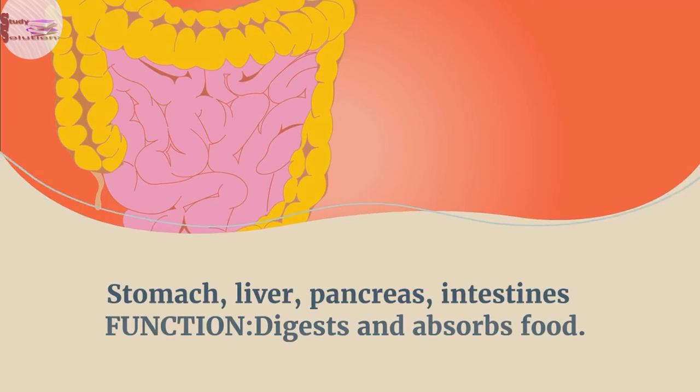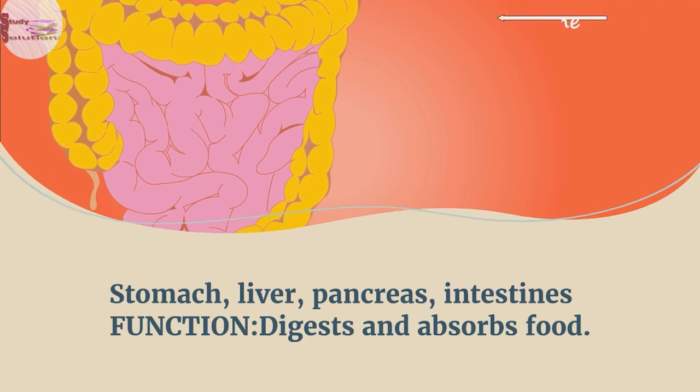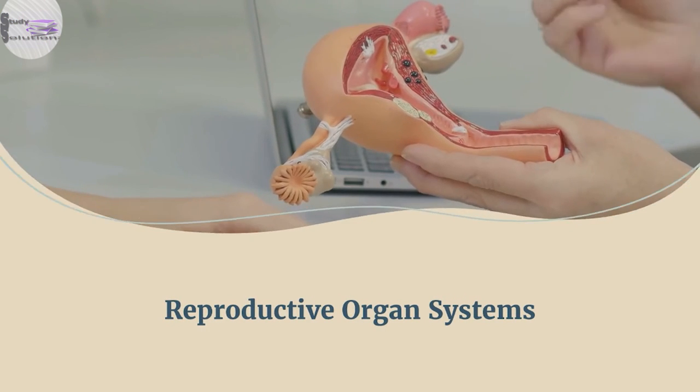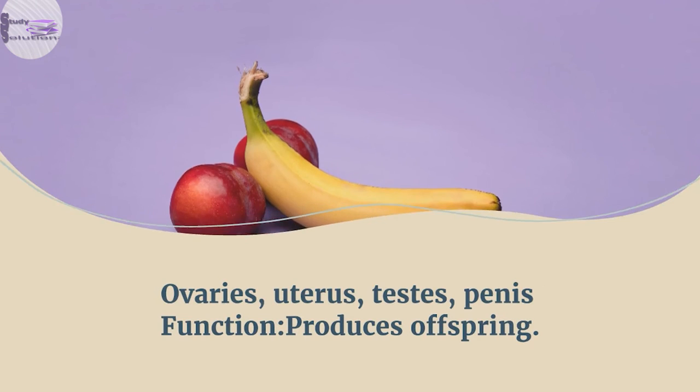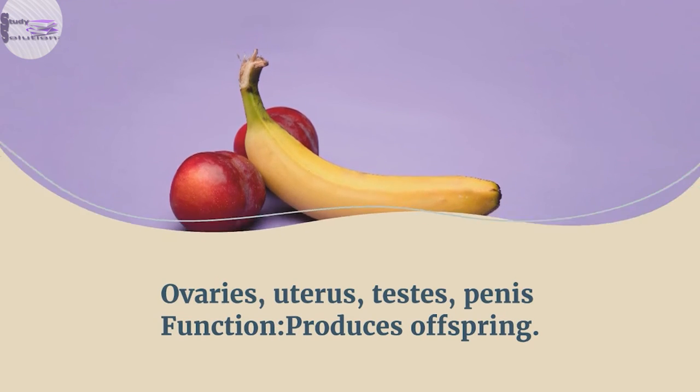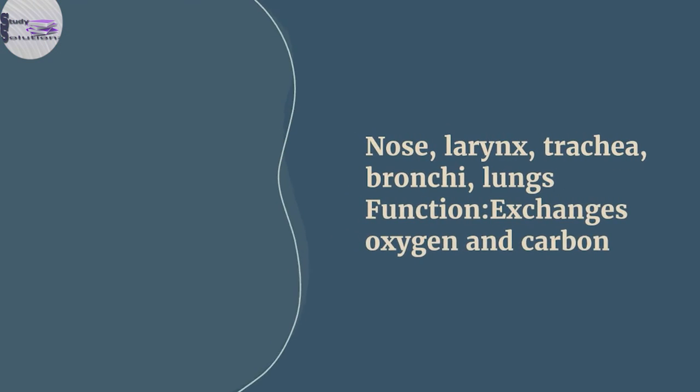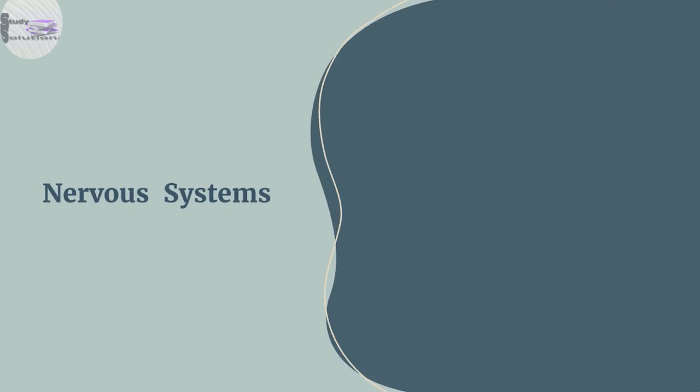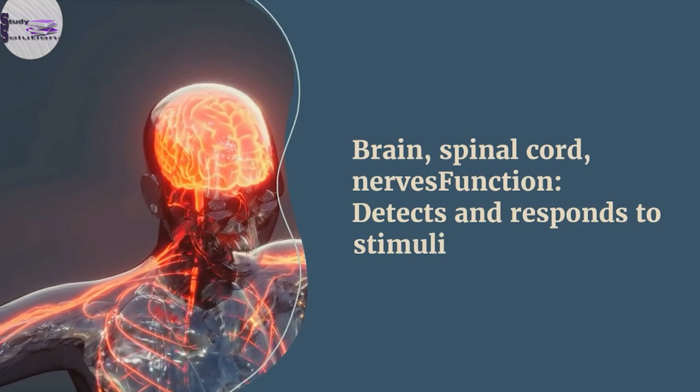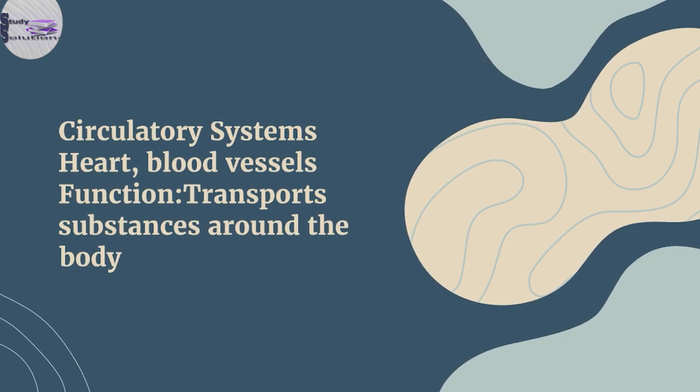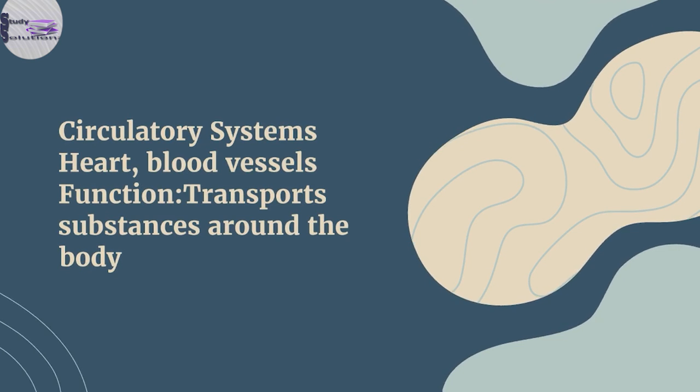Organ systems. Digestive system: stomach, liver, pancreas, intestines. Function: digests and absorbs food. Reproductive system: ovaries, uterus, testes, penis. Function: produces offspring. Respiratory system: nose, larynx, trachea, bronchi, lungs. Function: exchanges oxygen and carbon dioxide. Nervous system: brain, spinal cord, nerves. Function: detects and responds to stimuli. Circulatory system: heart, blood vessels. Function: transports substances around the body.